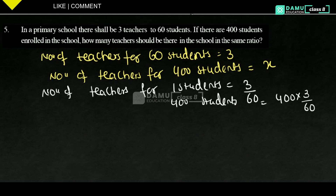By the unitary method, the number of teachers per 1 student equals 3 by 60. Then for 400 students it will be 400 into 3 by 60. The zeros cancel, giving 400 by 60 into 3, which equals 20 teachers for 400 students.